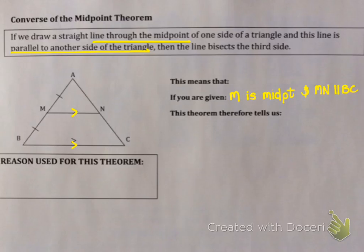So if you're given those two, what can you assume from this theorem? Then the line must bisect the third side.